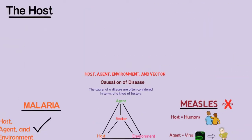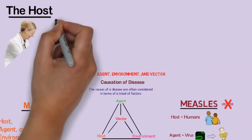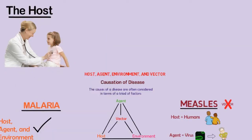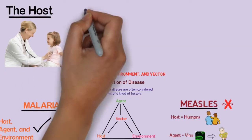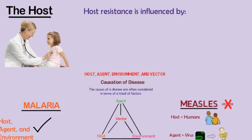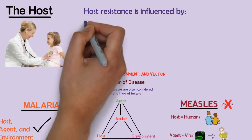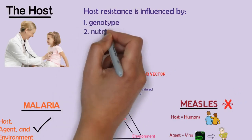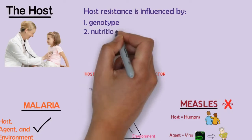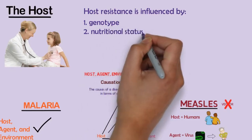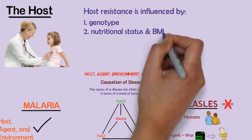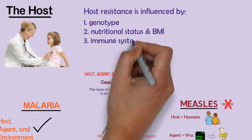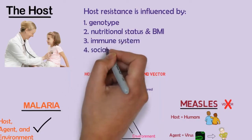Host factors are responsible for the degree to which the individual is able to adapt to the stressors produced by the agent. Host resistance is influenced by a person's genotype — for example, dark skin reduces sunburn — and nutritional status and body mass index — for example, obesity increases susceptibility to many diseases.